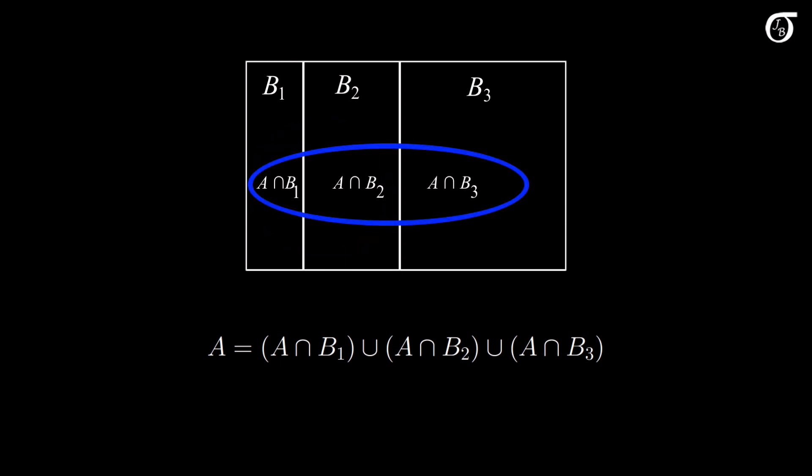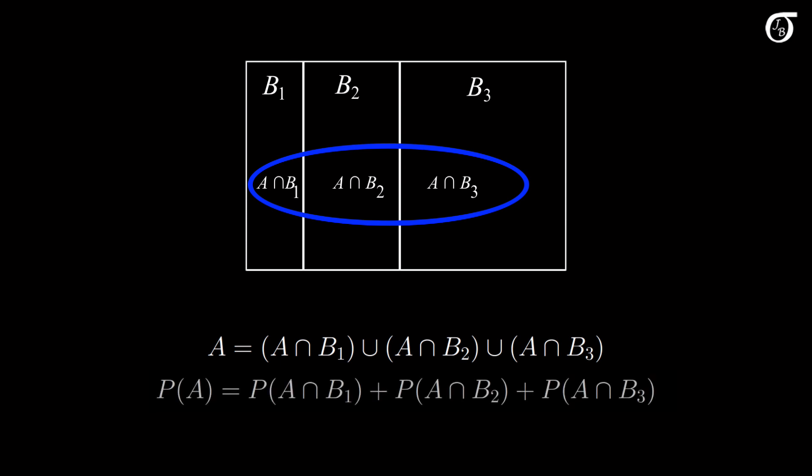So A is the union of three intersections. And since those intersections are mutually exclusive, because the B's are mutually exclusive, the probability of A is the sum of the probabilities of those three intersections.